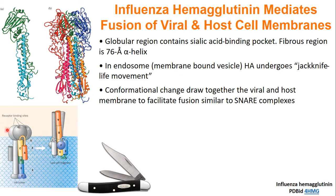Once HA binds at the binding site, the fibrous portion will snap out like a jackknife. This conformational change — the jackknife action — is what helps draw the viral and the host membranes together. Then a fusion event occurs that is similar to the SNARE complexes. And that is how your body is affected by the flu during flu season.